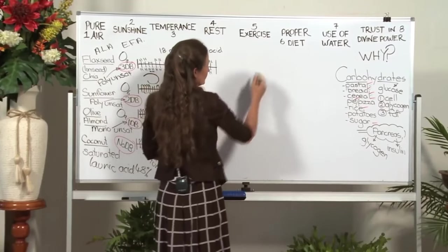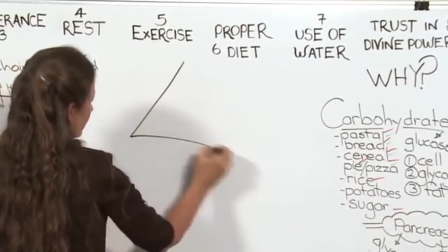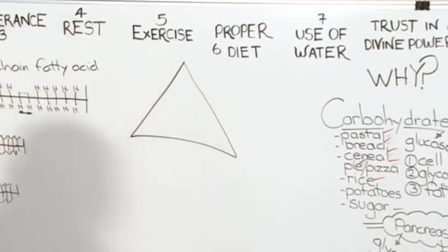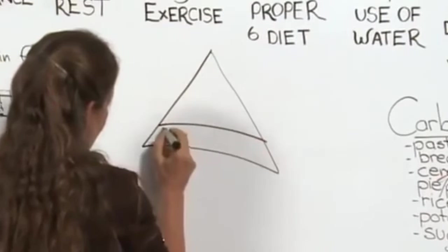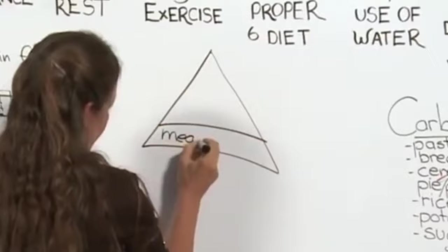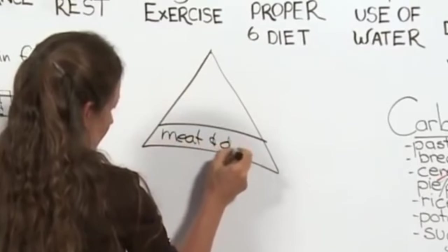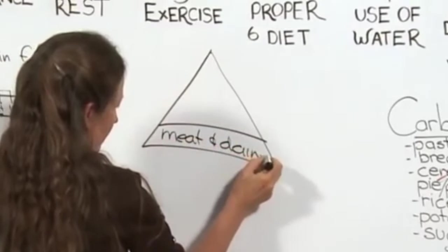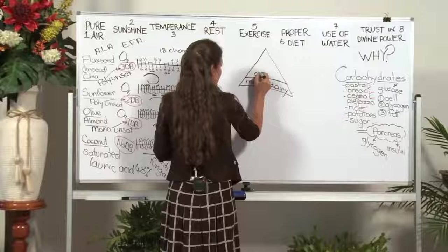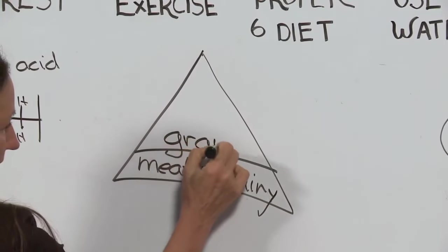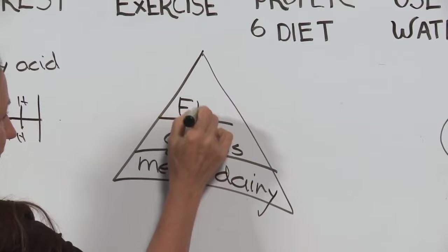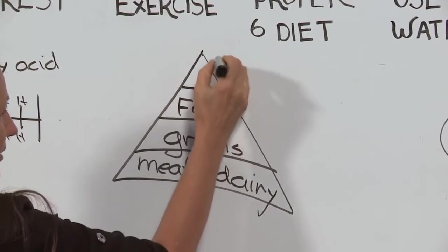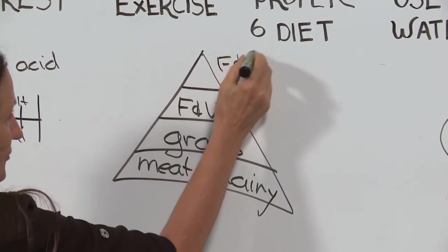When I was at school, there was a triangle in the common sense cookery book. The bottom rung of the triangle was meat and dairy, the next rung was grains, then fruit and vegetables, and right up the top were fats and sugars.